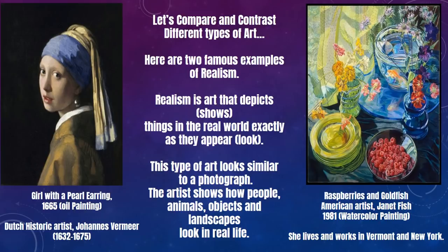First, let's compare and contrast different types of art. Here you see two famous examples of realism. Realism is art that depicts or shows things in the real world exactly as they appear or look. This type of art looks similar to a photograph. The artist shows how people, animals, objects, and landscapes look in real life.